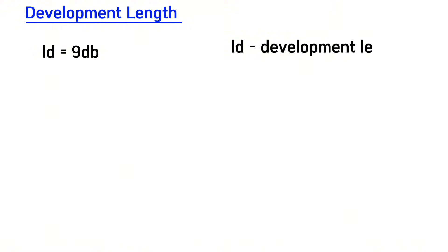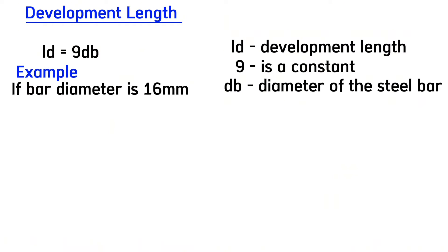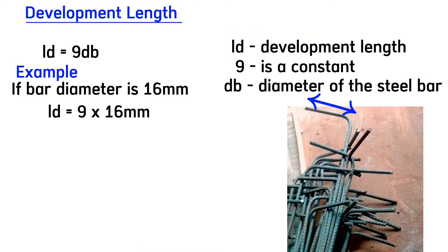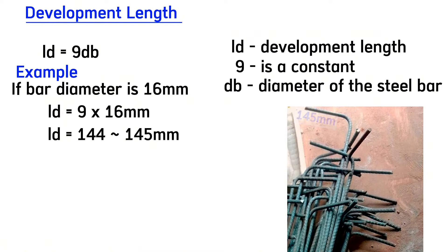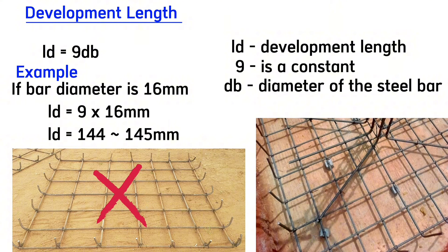The formula for determining the correct development length in the footing is LD equals 9 DB, where LD means the development length, 9 is a constant, and DB means the diameter of the bar. For example, if you are using a 16 millimeter bar in the base, the development length will be LD equals 9 multiplied by 16 millimeters, which gives us 144 millimeters, so the cutting length will be 145 millimeters. Instead of cutting a short hook, use the formula LD equals 9 DB to determine the appropriate development length.